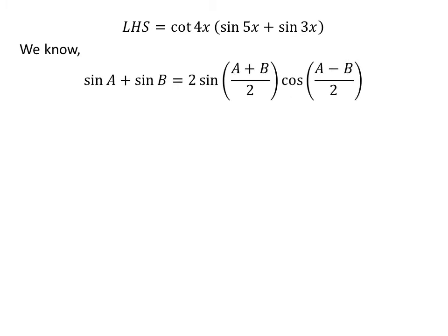We know the famous trigonometry identity: sine of A plus sine of B equals 2 times sine of half of (A plus B) times cosine of half of (A minus B). The proof of this identity is given in the video appearing in the upper right corner, and the link is also given in the description section.